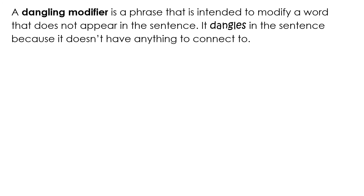A dangling modifier is a phrase that is intended to modify a word that does not appear in the sentence. It dangles in the sentence because it doesn't have anything to connect to.